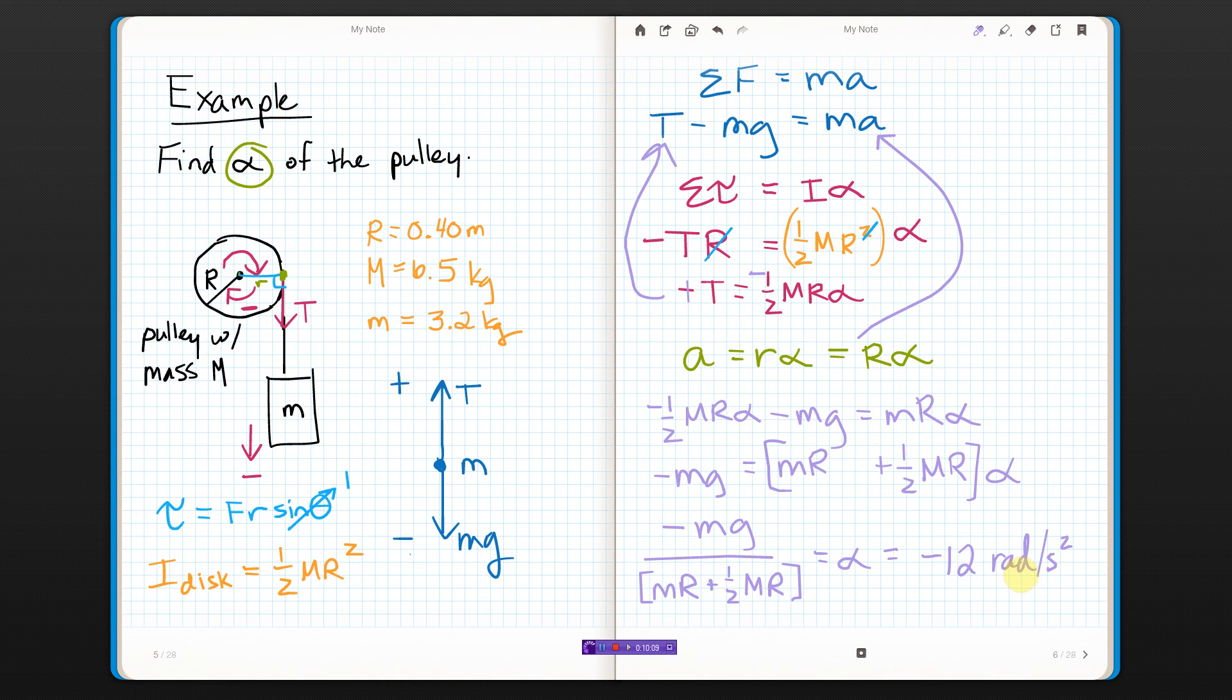Which I'm just going to check on my sign conventions. I said that negative was this way, which makes sense. That's the way that if I started from rest, it should end up moving, so the acceleration should also be negative. Another way to write that would be 12 radians per second squared clockwise. That's usually the best way, is using a direction word. Radians per second squared clockwise. That's the best way.